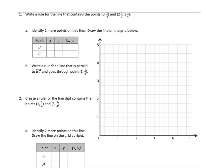For number 1, we have several parts here. We need to create a rule for a line that contains (0, 3/4) and (2.5, 3.25). A little cut off, but that's what the numbers are. So how can I get from 0 to 3/4? Well, one thing I could possibly do is add 3/4.